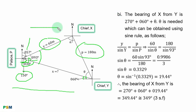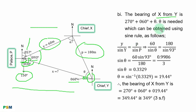This is Part A — the diagram. For Part B, Roman numeral 1: the bearing of S from Y. Going from Y, you start moving from the north to the point that joins S and Y together. That bearing is 270 degrees plus 060 degrees plus theta. Theta is needed, which can be obtained using the sine rule: Y over sine Y equals P over sine P.